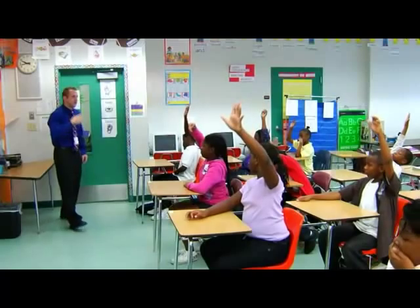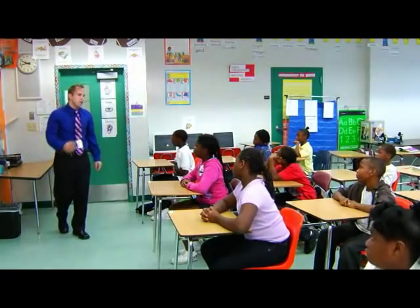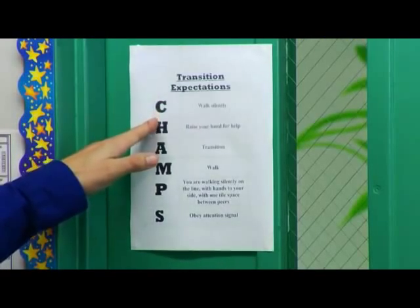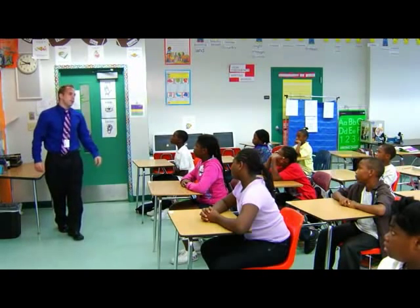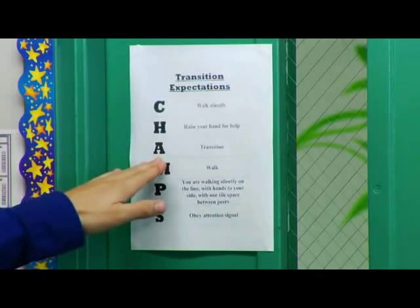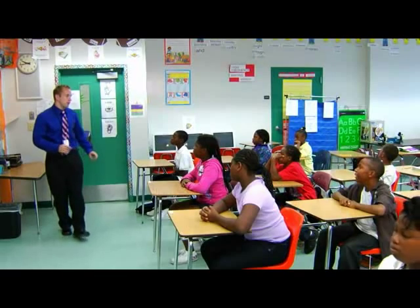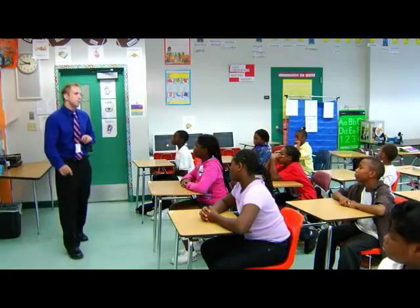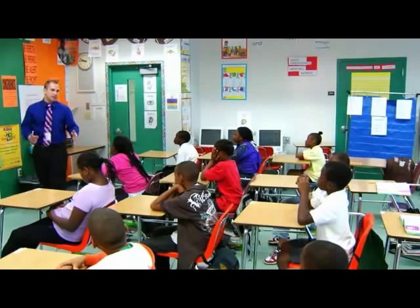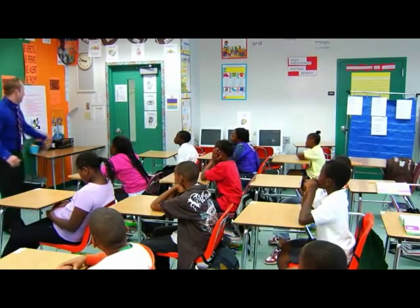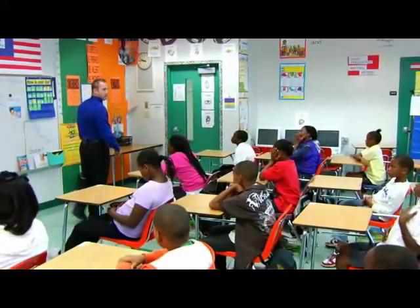Let's watch again. This time the students will be lining up. We are transitioning now. Here are my expectations for you. Your conversation level lining up and in the hallways is always on a zero — that means you are silent. If you need help at any point in time, I would like you to raise your hand. Our activity is that you will be standing up and walking quickly and quietly to our line. I would like you to line up with one tile space between you and the person in front of you. When we enter the hallway, I want you walking on the line, facing forward.